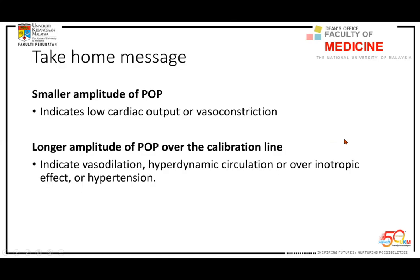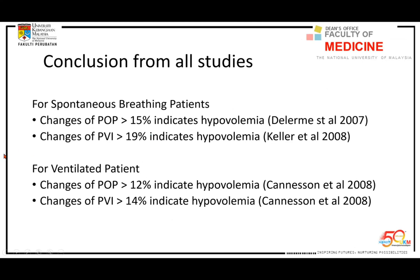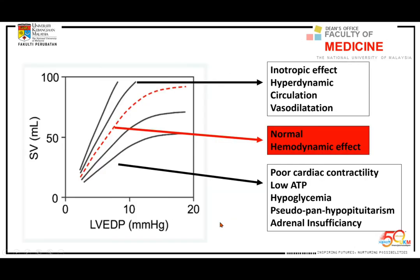Take-home message: smaller amplitude POP indicates low cardiac muscle contraction; larger amplitude POP indicates vasodilation, hyperdynamic circulation, over-inotropic state, or hypotension. For spontaneous breathing patients, delta POP cutoff is 15% and delta PBI is 19%. For ventilated patients, delta POP more than 12% and delta PBI more than 14% indicate hypovolemic shock. This is the final chart showing normal hemodynamic curve, inotropic curve, contractility, and hypoglycemia or low ATP curve. Thank you.